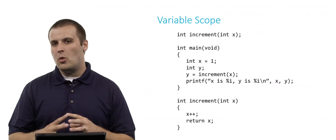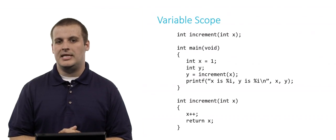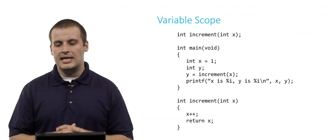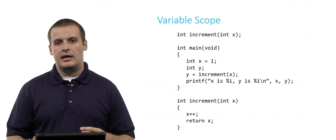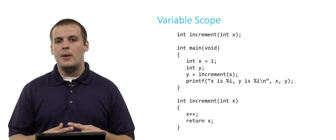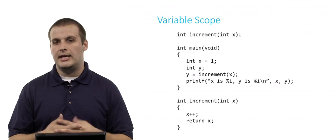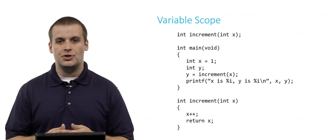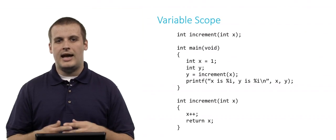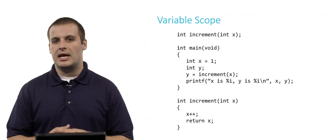For example, do you know what will be printed out at the end of this particular program? Take a minute, pause the video, and read through this program. You can see at the top we have a function declaration for a function called increment. That function takes a single parameter, an integer, which we call x, and it outputs an integer. That's the return type at the beginning.